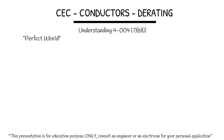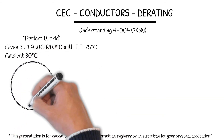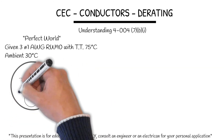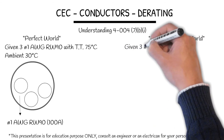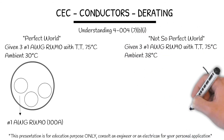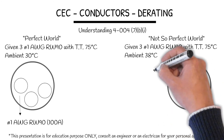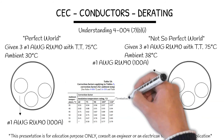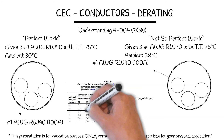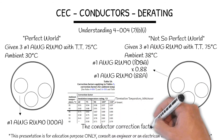Understanding 4.004-7BI. Here's a perfect world condition: given 3 number 1 RW90 with TT75 and an ambient of 30 degrees Celsius. In a not-so-perfect world, number 1 RW90 with TT75 but now the ambient is 38 degrees Celsius. In the perfect world, number 1 RW90 is good for 100 amps. Looking at Table 5A, we need to use the insulation temperature or termination temperature — whichever is lower — to dictate the column. At the 75 degree column at 40 degrees Celsius ambient, I get 0.88. Applying that to the wire, I get number 1 good for 88 amps. The conductor correction factor limits the capacity to 88 amps.